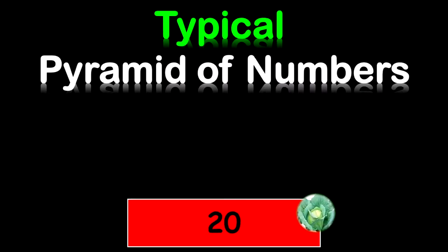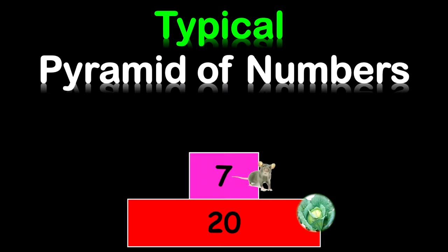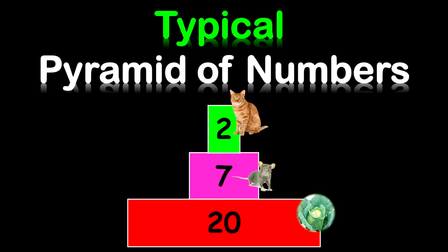What you need to focus on is the number of organisms given at each level, and you draw your relative size of box according to those numbers. In a typical situation, let's say we have 20 cabbage, 7 rats, and 2 cats. Typically, a pyramid of numbers will have an upward shape, starting from a larger base and decreasing as it goes up. Because what is producing energy is typically greater than what is consuming the energy — hence, this is the typical shape for a pyramid of numbers.